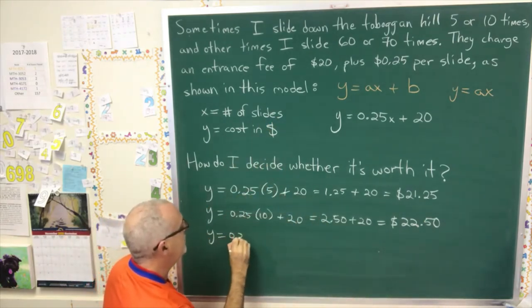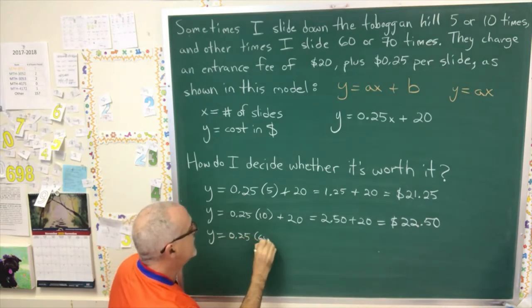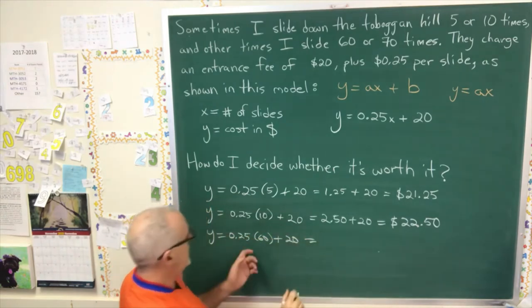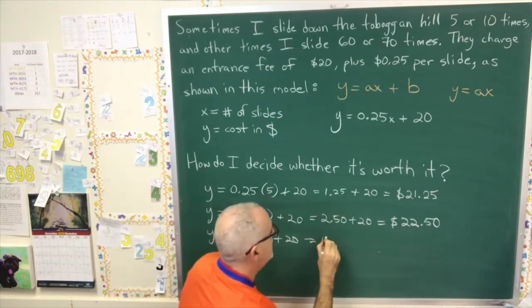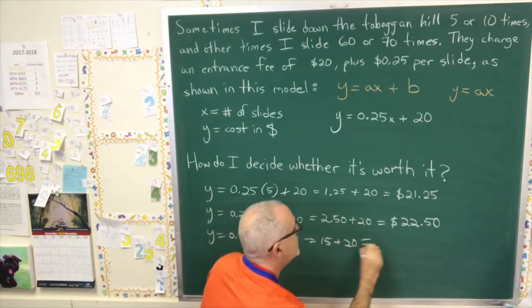Y equals 0.25 times 60 plus 20, which is 15 plus 20, which is $35.